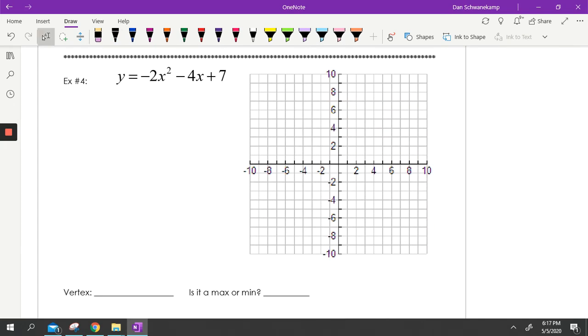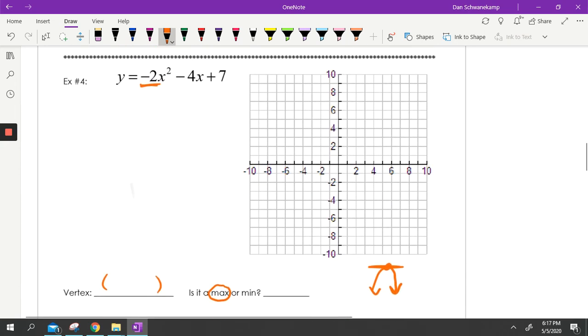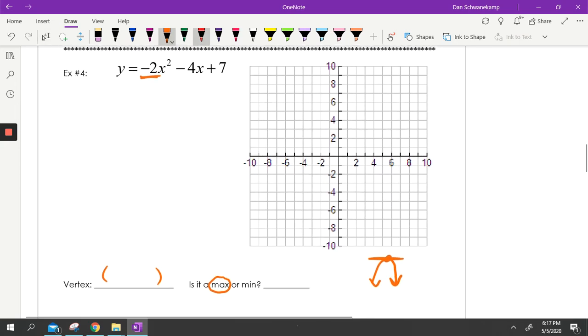Last one. A little bit different here. So before we do anything else, is it going to be a max or a min? When I find this vertex here, is it a max or a min? And hopefully, in your brain, you're thinking, hey, it's a negative A value. So a negative A value is going to make it open down. So is that point right there going to be a maximum or a minimum? It should be a maximum. How do I know it's a maximum? Because it's higher than everything else. There's no point higher than that one.